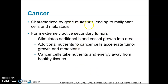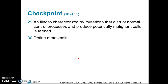Cancer is characterized by gene mutations leading to malignant cells and metastasis. Cancer cells form extremely active secondary tumors which stimulate blood vessel growth, and those new blood vessels feed the tumors, causing the cancer to spread even faster. Cancer cells also take nutrients and energy away from healthy tissues. An illness characterized by mutations that disrupt normal control processes and produce potentially malignant cells is termed cancer. Metastasis is simply when cancer spreads. That is it for Chapter 3.